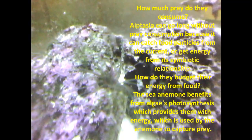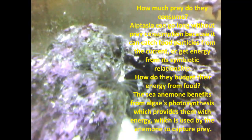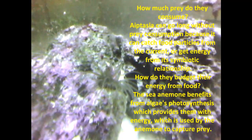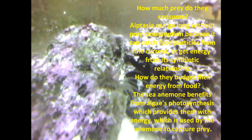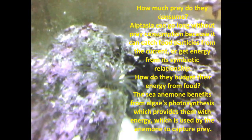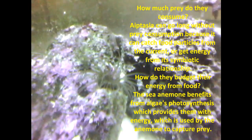How much prey do they consume? Aiptasia can go long periods without prey consumption because it can catch food particles from the current, or get energy from its symbiotic relationship. How do they budget their energy from food? The sea anemone benefits from algae's photosynthesis, which provides them with energy used by the anemone to capture prey.